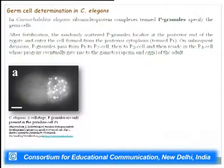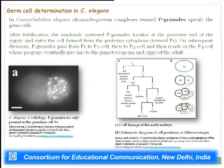In C. elegans, ribonucleoprotein complexes termed P granules specify the germ cells. After fertilization, the randomly scattered P granules localize at the posterior end of the zygote and enter the cell formed from the posterior cytoplasm, termed P1. At the two-cell stage, P granules are only present in the germline cell P1. On subsequent divisions, P granules pass from P1 to P2, then P3, and ultimately reside in P4, whose progeny give rise to the gametes.